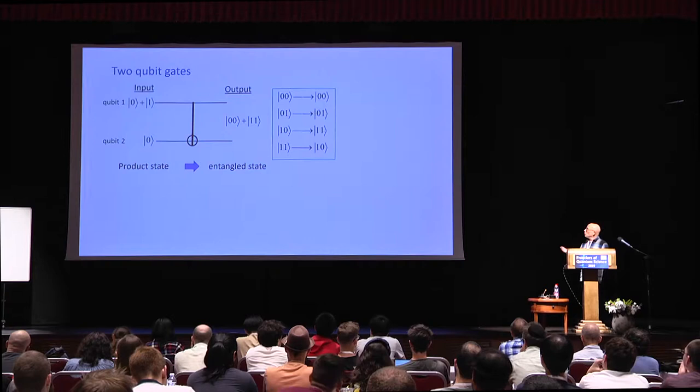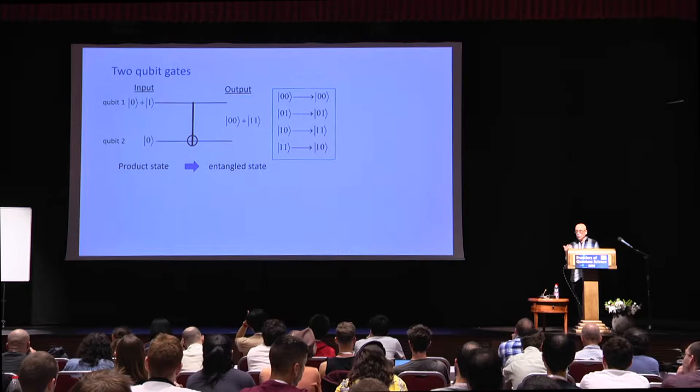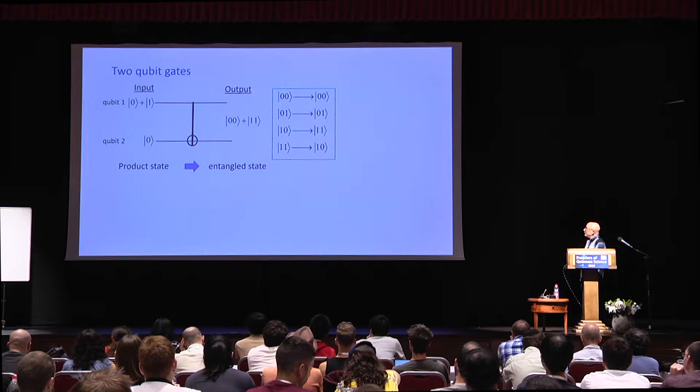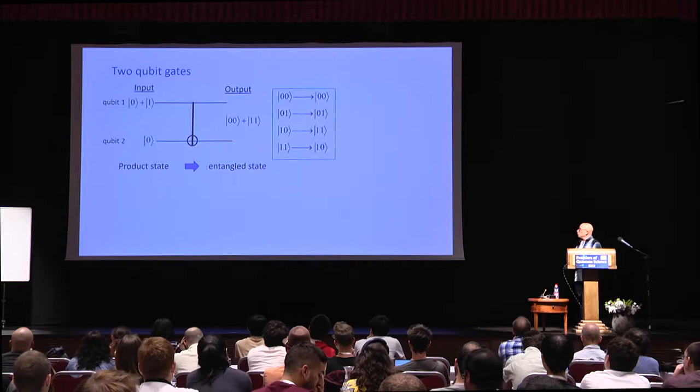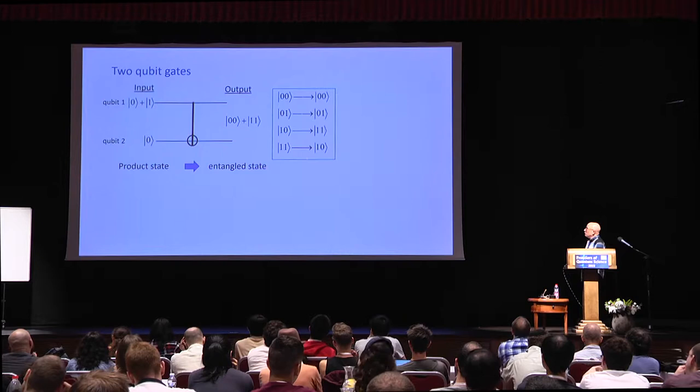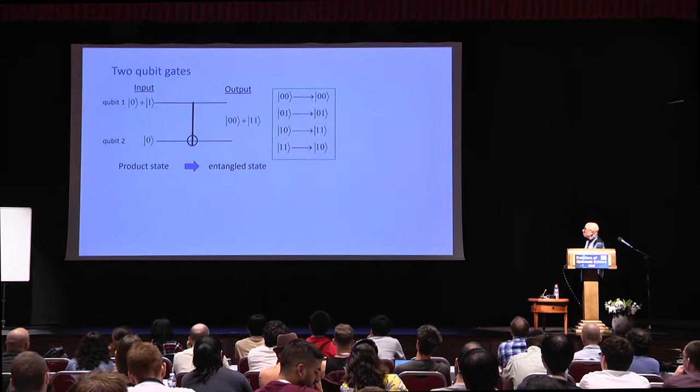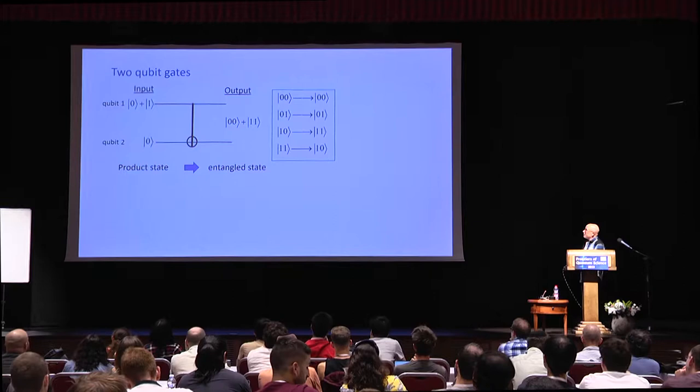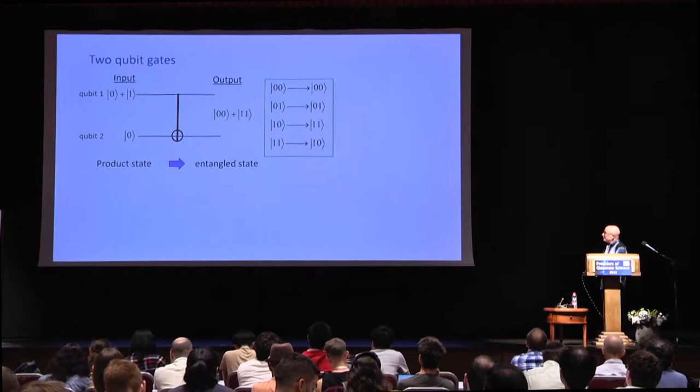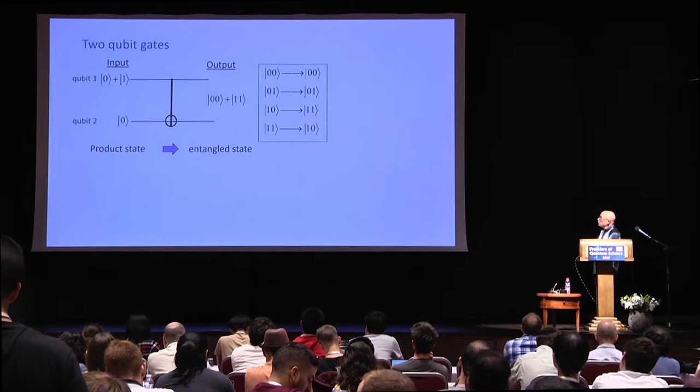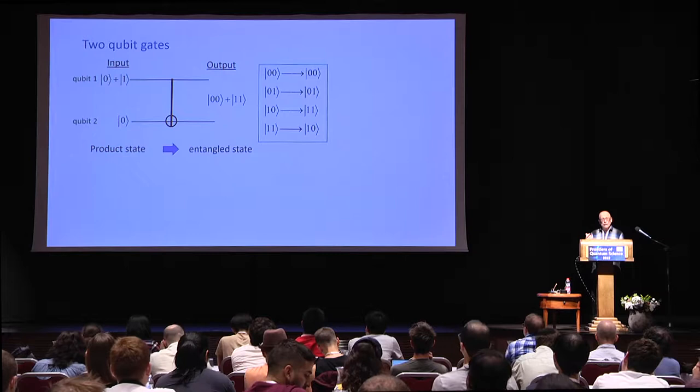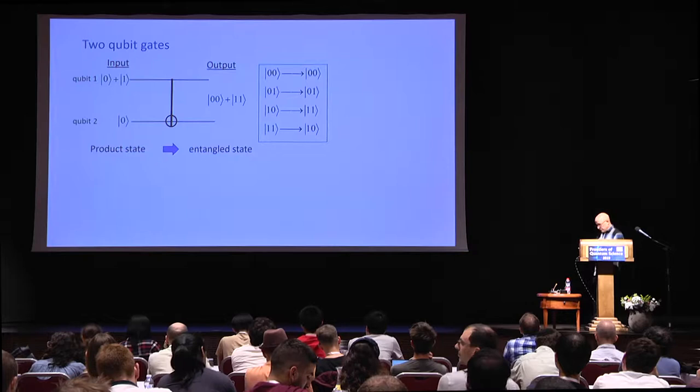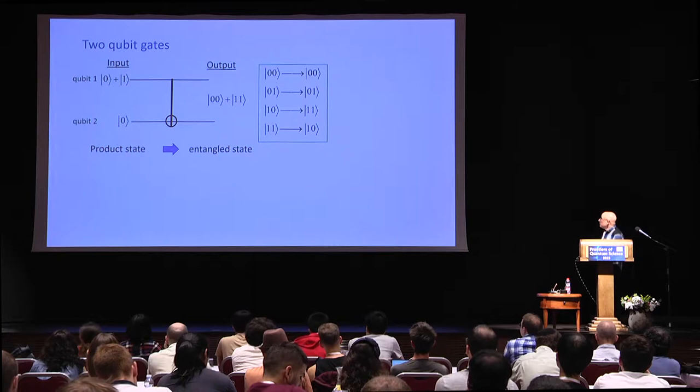Once you have a functioning qubit, you want more than one and to couple them together. The most basic two-qubit gate is the CNOT gate. It has a truth table which is classical: if the first bit is zero, it does nothing; if it's one, it flips the second bit. The quantum aspect is that if the first bit is in a zero plus one superposition, then even though the initial state is a product state, the output will be an entangled state. This two-qubit gate is a producer of entanglement.